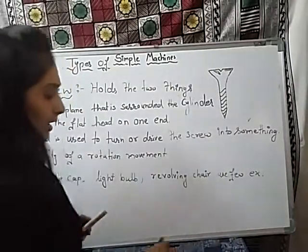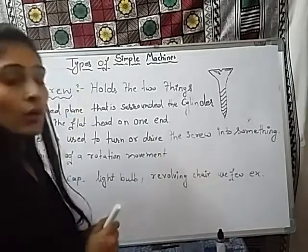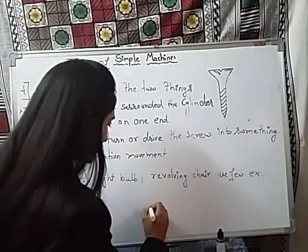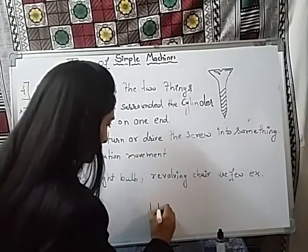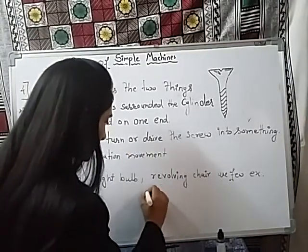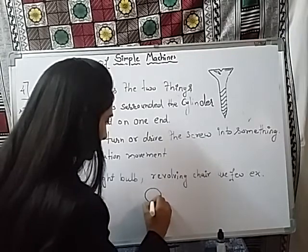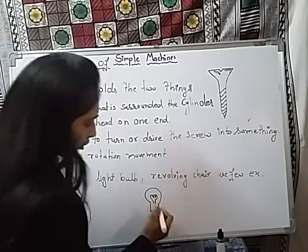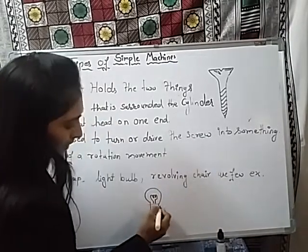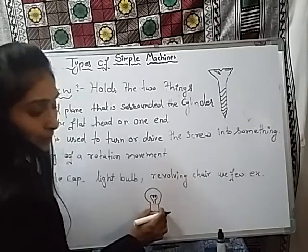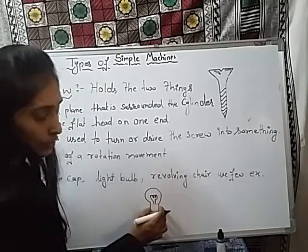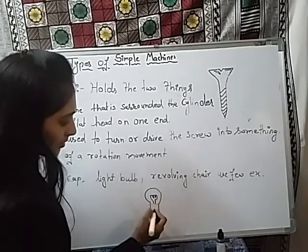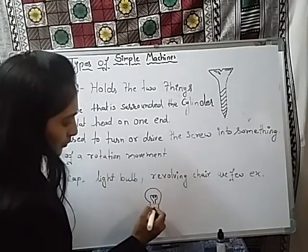The second example is the light bulb. If you observe the light bulb — suppose this is the light bulb — you can observe this metallic plate, which is the metallic cap below the glass bulb.